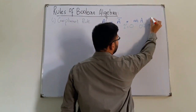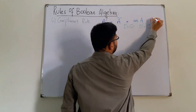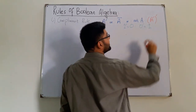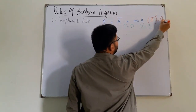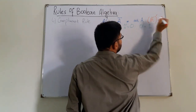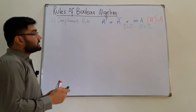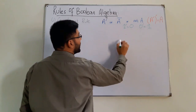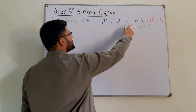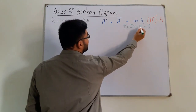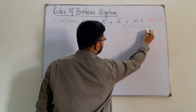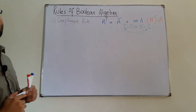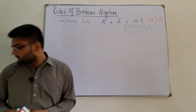An important property is that if you take the complement of the complement, you get back the original value. For example, the complement of 1 is 0, and then taking the complement of 0 again gives 1. So the complement of the complement equals the original value.